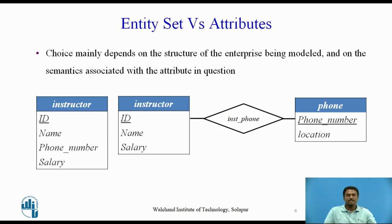In contrast, it would not be appropriate to treat the attribute name of an instructor as an entity. It is difficult to argue that name is an entity in its own right, in contrast to the phone. Thus, it is appropriate to have name as an attribute of the instructor entity set. Two natural questions arise: what constitutes an attribute and what constitutes an entity set? Unfortunately, there are no simple answers. The distinction mainly depends on the structure of the real-world enterprise being modeled and on the semantics associated with the attribute in question.